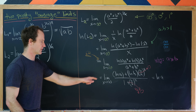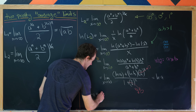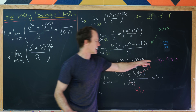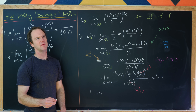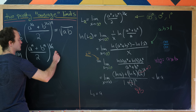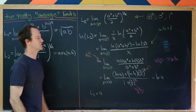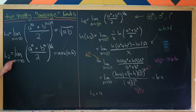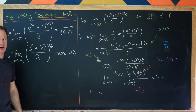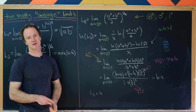So the natural log of our limit is ln(a), meaning L2 = a. But remember, we assumed a was bigger than or equal to b — so putting generality back in, L2 is really the maximum of a and b. Our first limit is the geometric mean, and our second limit is this maximum value, which is actually itself a type of mean.